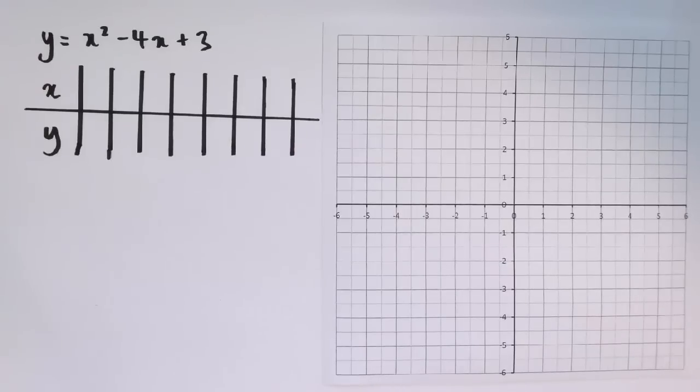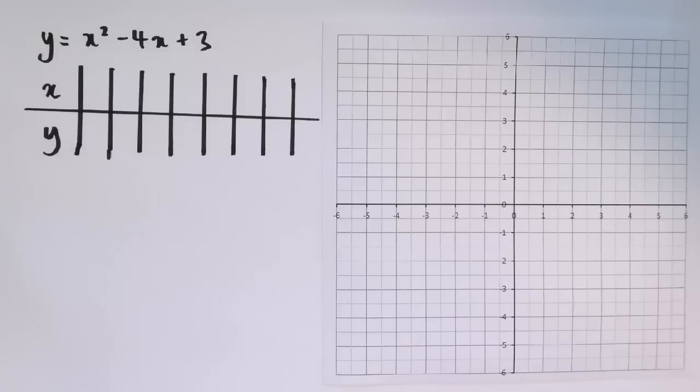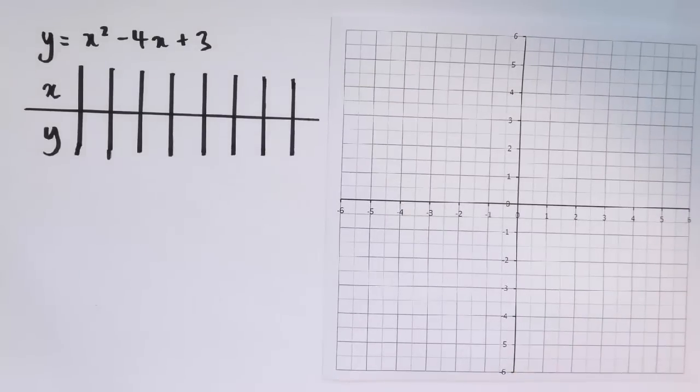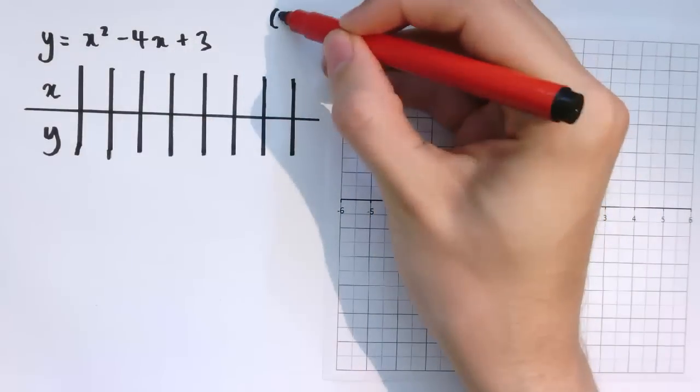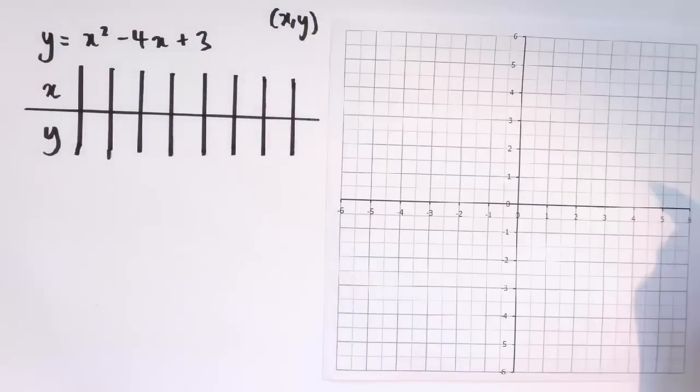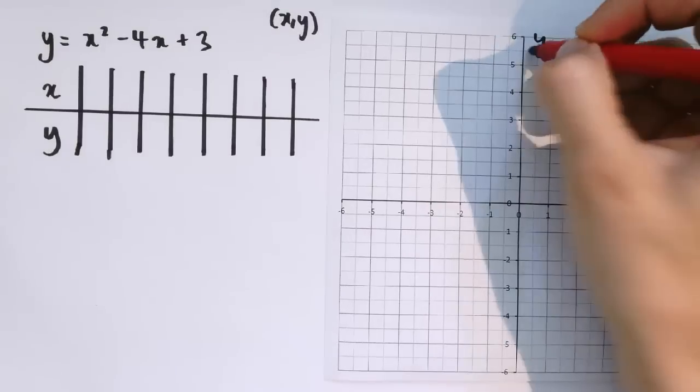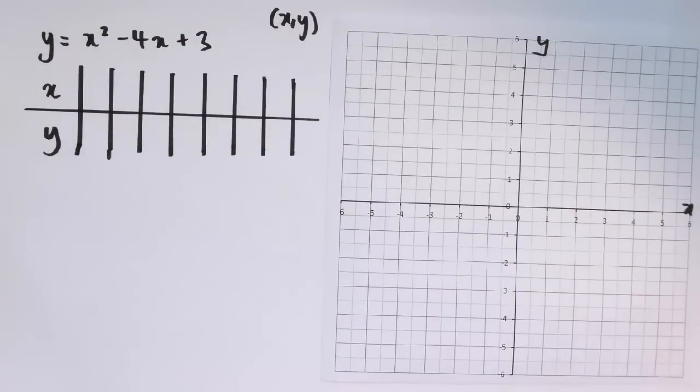I'd like to plot the graph of y equals x squared minus 4x plus 3. Remember, the graph is just a set of all the points whose coordinates x, y satisfy this relationship where we've got the x and y-axes here. So we can just start playing around with this and investigating points.